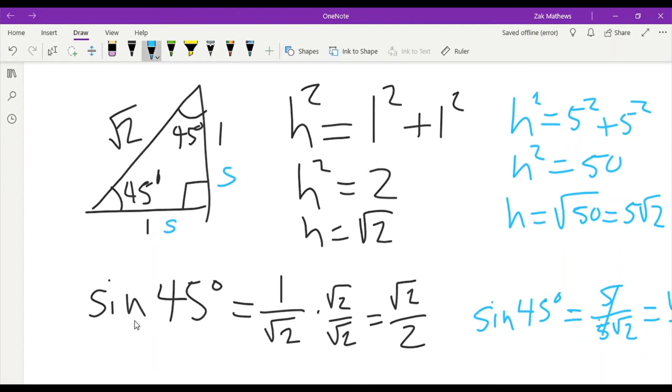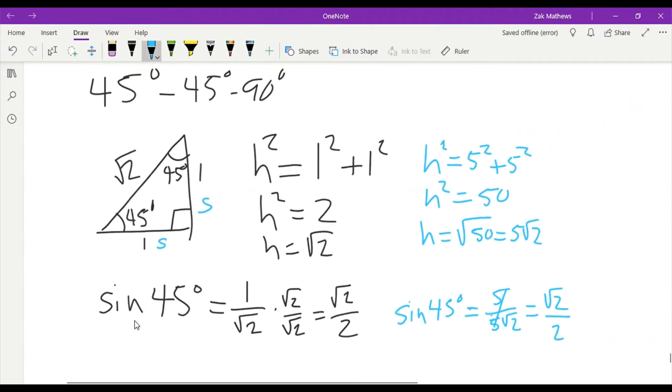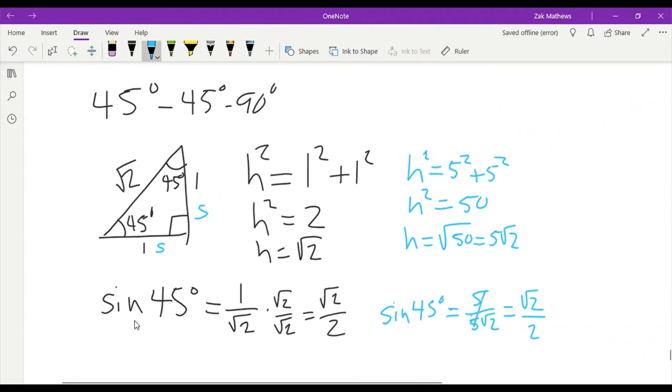But what does the sine, cosine, or tangent do? It relates as proportions. So by relating the proportions, we cancel out those scaling up or scaling down factors, whatever they might be. That's why we're always going to get sine of 45 to be root two over two. It doesn't matter what the initial sides are.